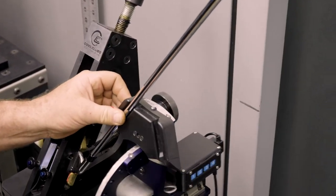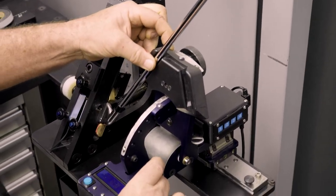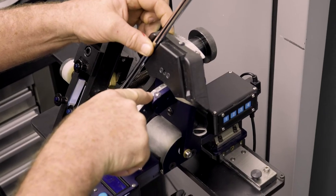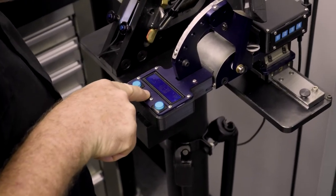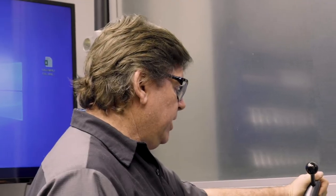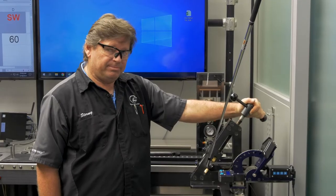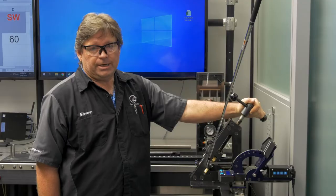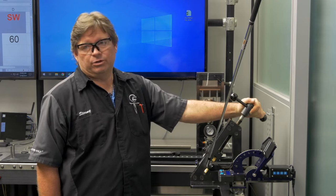You'll get a lie angle reading and analog loft reading, as well as a digital lie and loft reading. The club will be loft and lied to the exact specs in the file. We've actually had our machine tested by lasers and is within one-tenth of a degree accuracy.